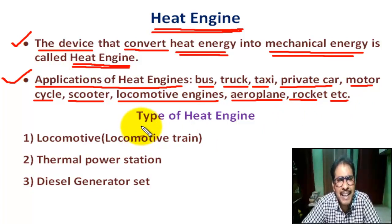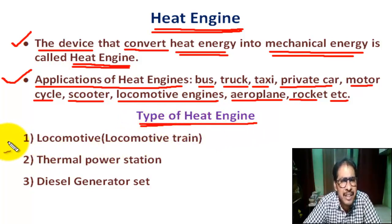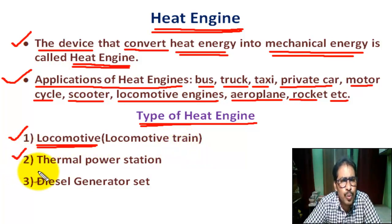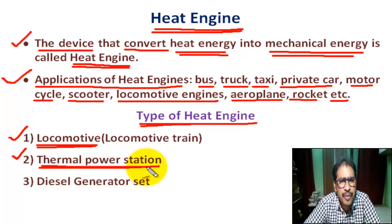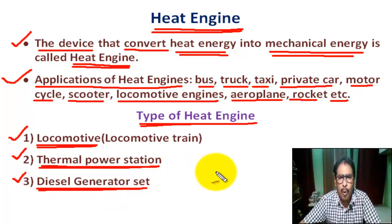Different types of heat engines: Number one, locomotive — meaning locomotive trains. Number two, thermal power station. Number three, diesel generator set, etc.